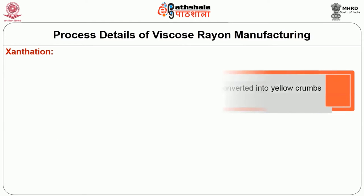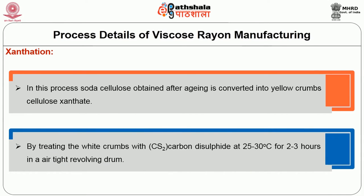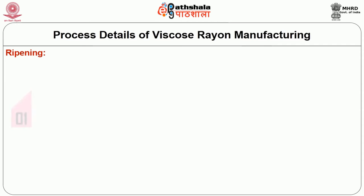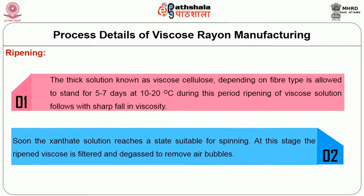The next process is the xanthation process. In this process, soda cellulose obtained by aging is converted into yellow crumbs — cellulose xanthate — by treating white crumbs with CS₂ (carbon disulfide) at 25 to 30 degrees Celsius for 2 to 3 hours in an airtight revolving drum. The next process is the ripening process. The thick solution known as viscose, depending on fiber type, is allowed to stand for 5 to 7 days at 10 to 20 degrees Celsius. During this period, ripening of the viscose solution takes place with a sharp fall in viscosity, and the xanthated solution reaches a state suitable for spinning. At this stage, the ripened viscose solution is filtered and degassed to remove air bubbles.